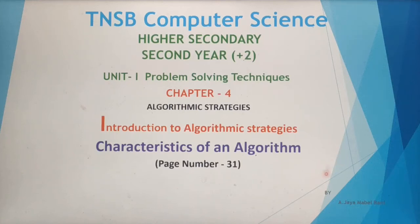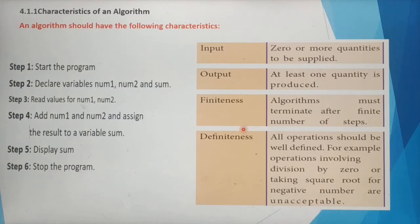Dear children, in this video we are going to see about characteristics of an algorithm from chapter 4. Let's see what is an algorithm. Algorithm is a step by step procedure to complete a particular task. Here we can see what are the different characteristics of an algorithm.